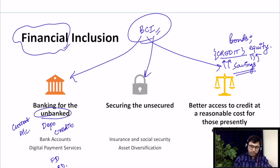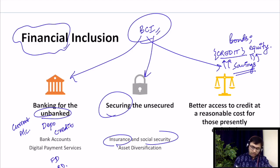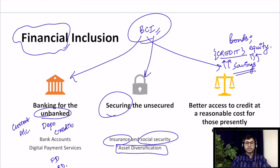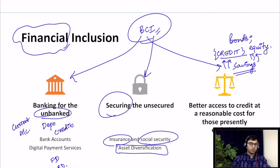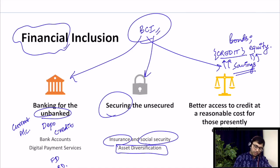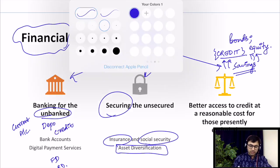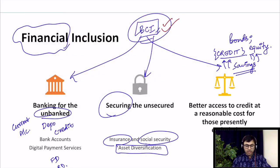The third aspect of financial inclusion is insurance, which provides security. Insurance and social security also result in asset diversification. A person is considered to be financially included when he has access to insurance services — meaning he is secured socially and financially. You can go for financial insurance, social insurance, life insurance, or health insurance. There are hundreds of types of insurance instruments which can be accessed. It is normally believed that if you have access to these three services, then you are financially included in the true sense.